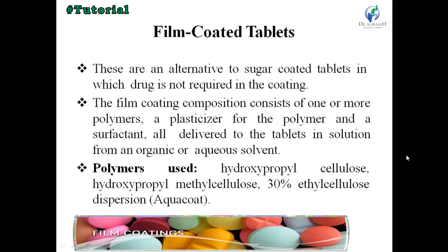Film coated tablets are an alternative to sugar coated tablets in which the drug is not required in the coating. The film coating composition consists of one or more polymers, a plasticizer, and a surfactant, all delivered to the tablets in solution from organic or aqueous solvents. Polymers used include HPC (hydroxypropyl cellulose), HPMC (hydroxypropyl methyl cellulose), and 30% ethyl cellulose dispersant.